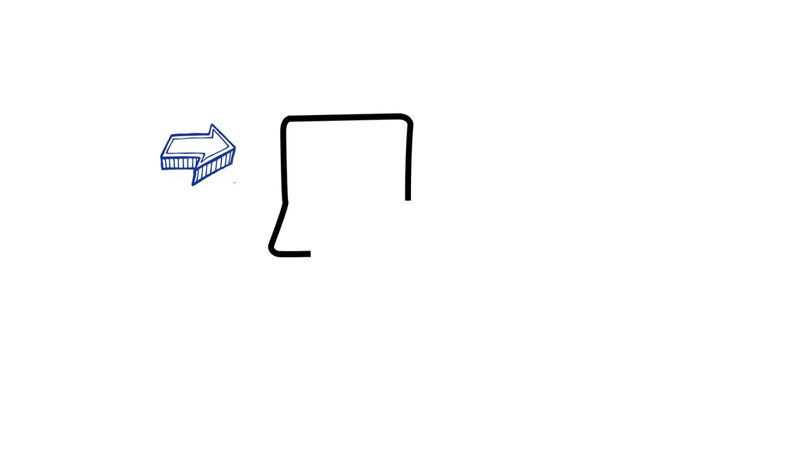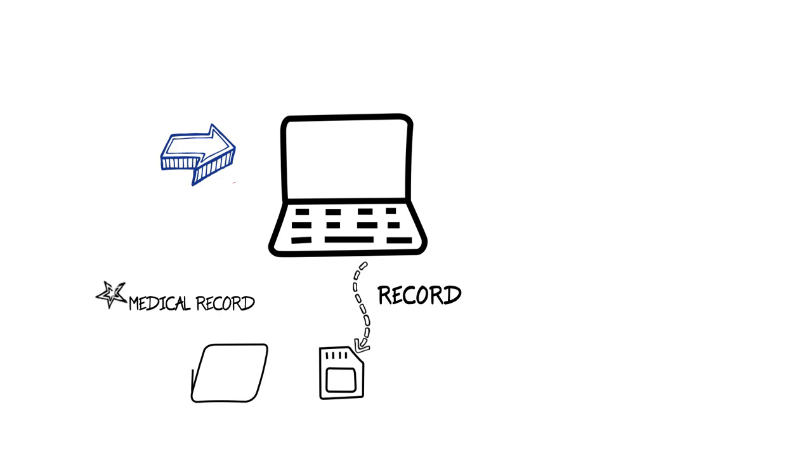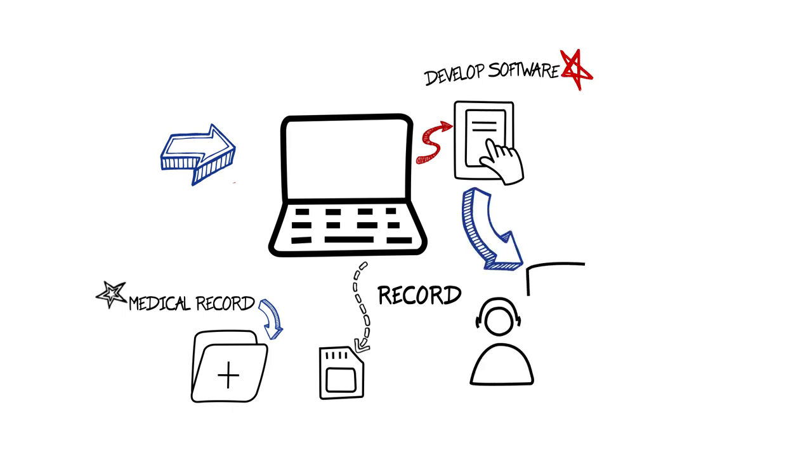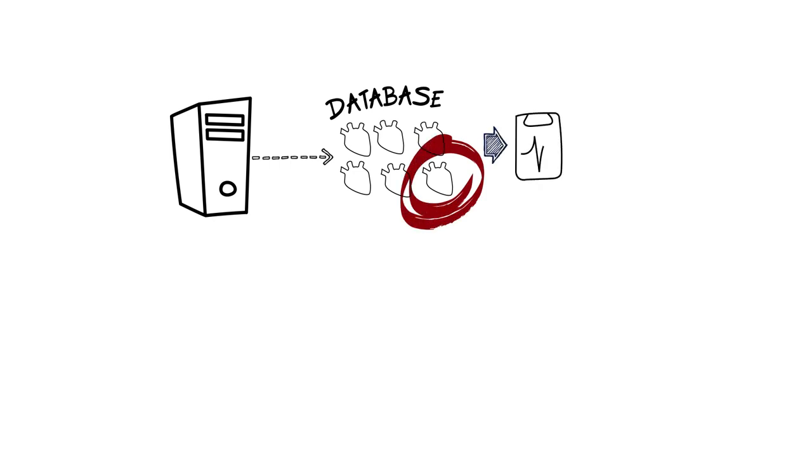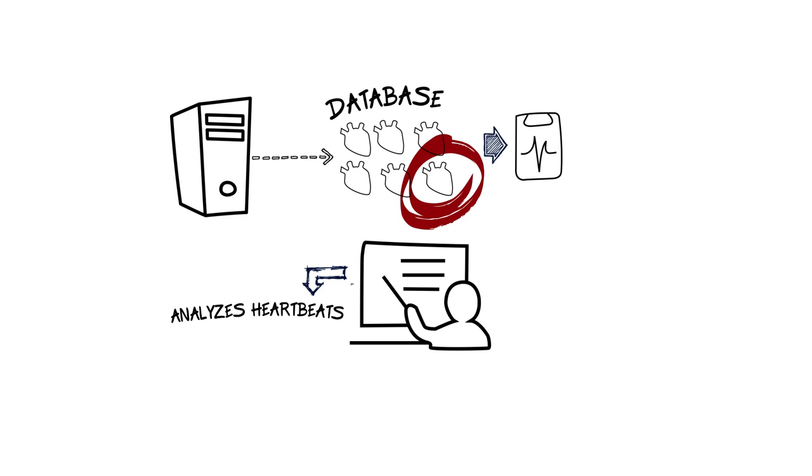We could have the chest piece communicate directly to a computer. We can record the heartbeat for the medical record. We could send the heartbeat directly to the computer and develop software to analyze and display information about the heartbeat. Since the heartbeat is recorded, we could easily get second opinions from specialists. We could record and generate a database of heartbeats with known medical conditions and unique signatures. We could create a new service that analyzes heartbeats that are emailed to us. What if the cube was super cheap so people could use it at home to record their heartbeats? And so on.